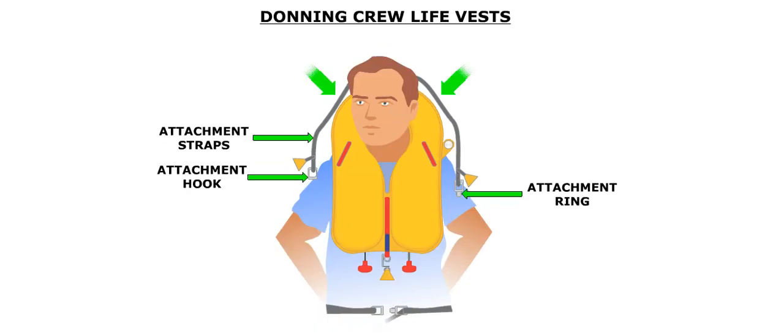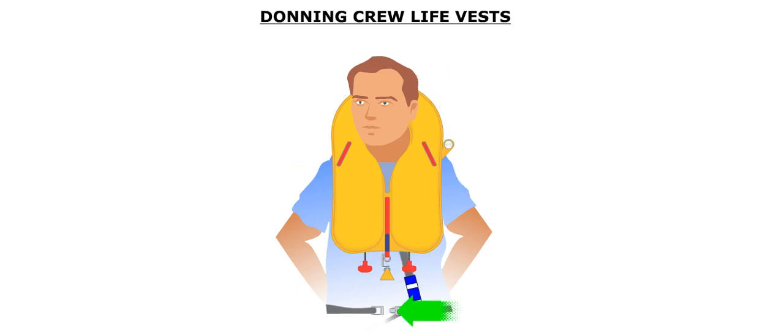The life vest is donned by sliding the vest over the head with the back piece behind. Two straps are connected to the back piece. The end of the strap consists of a clip. The straps are wrapped around the waist, and the clip of each strap is hooked to the attachment ring. The fitting of the straps can be adjusted by pulling on the straps. This secures the life vest to the user.